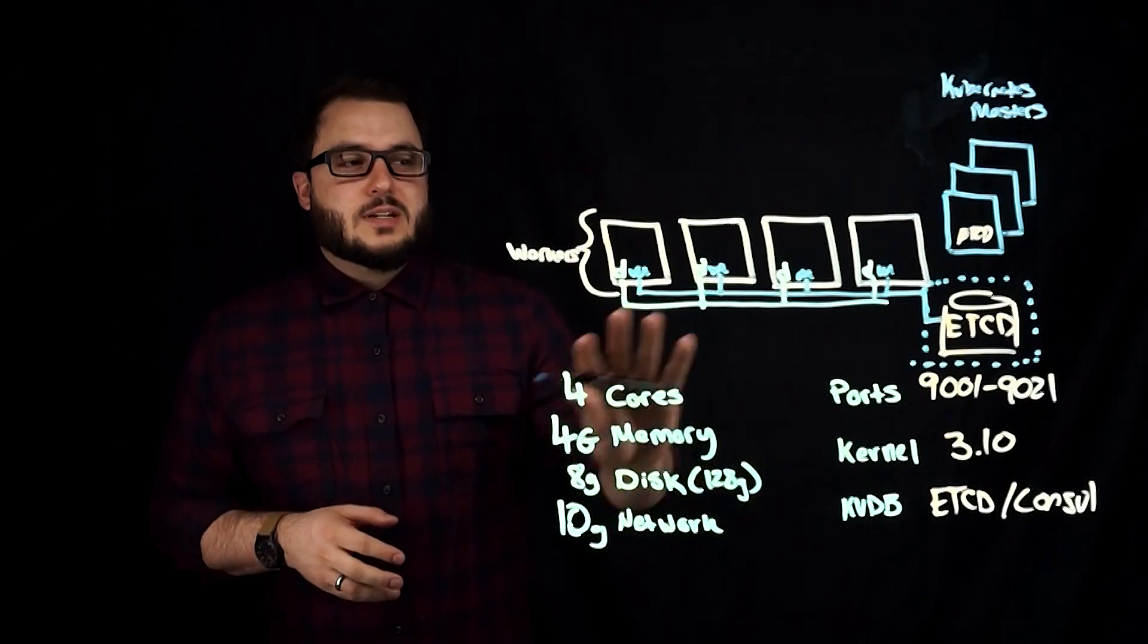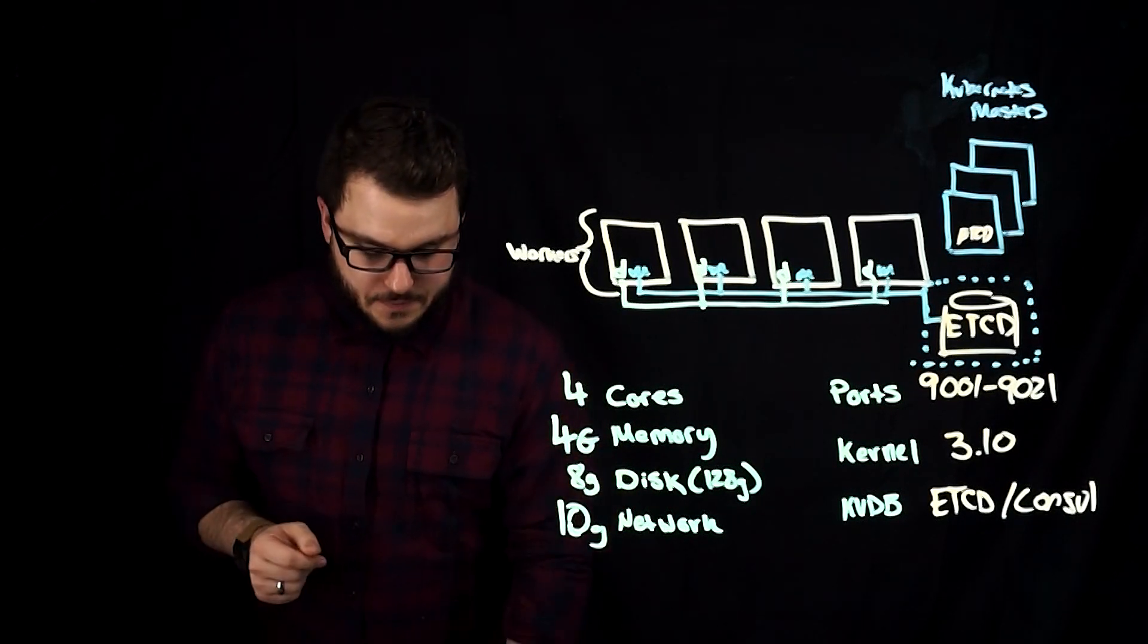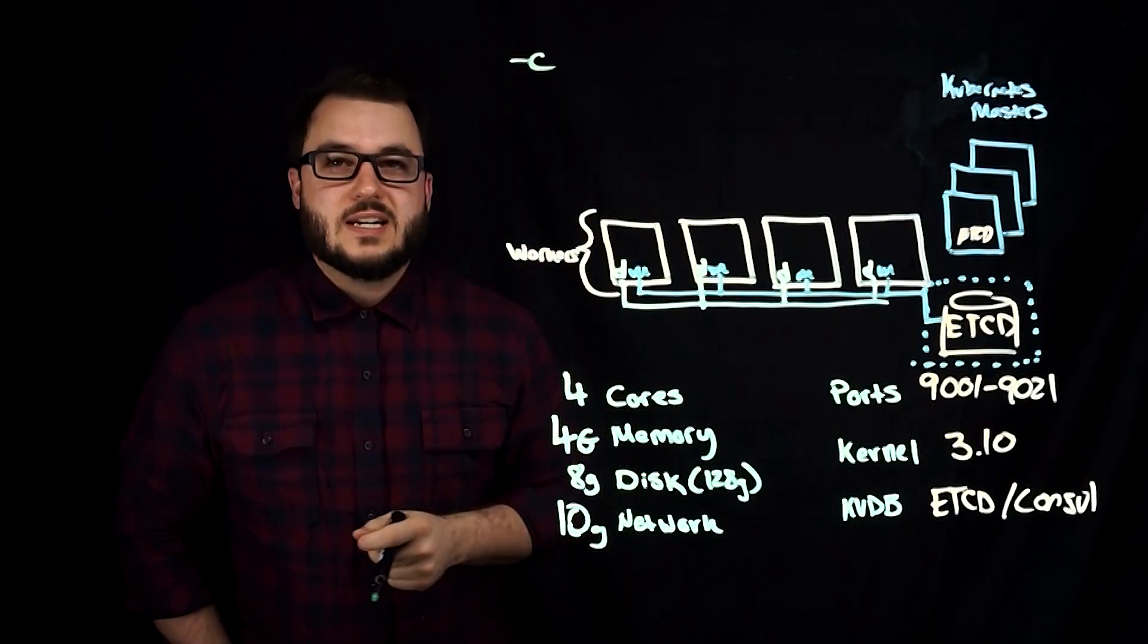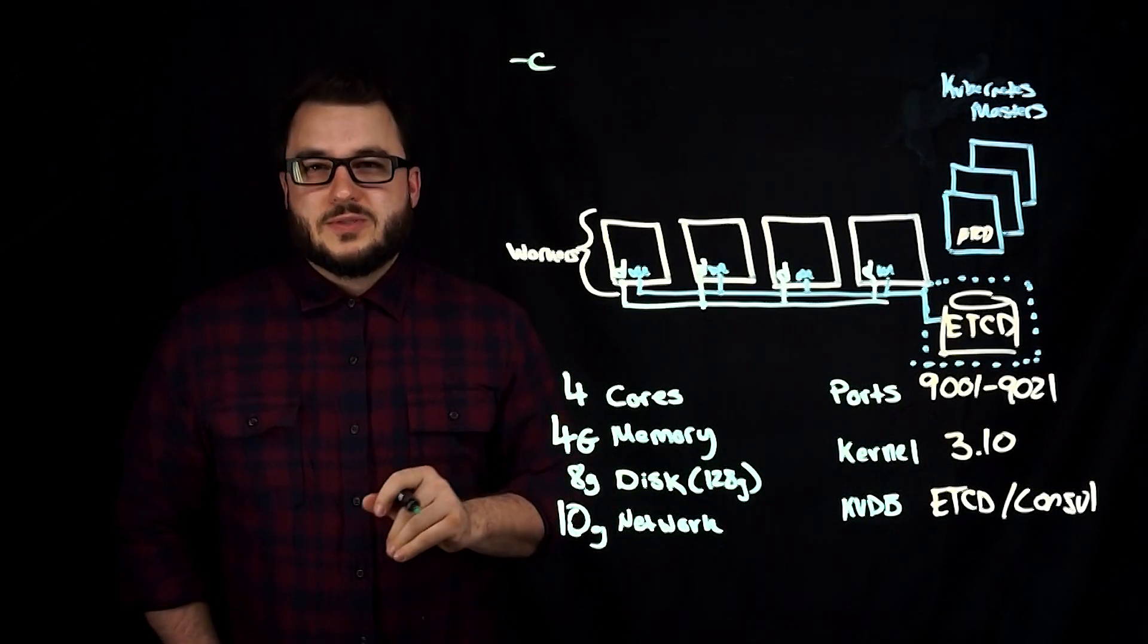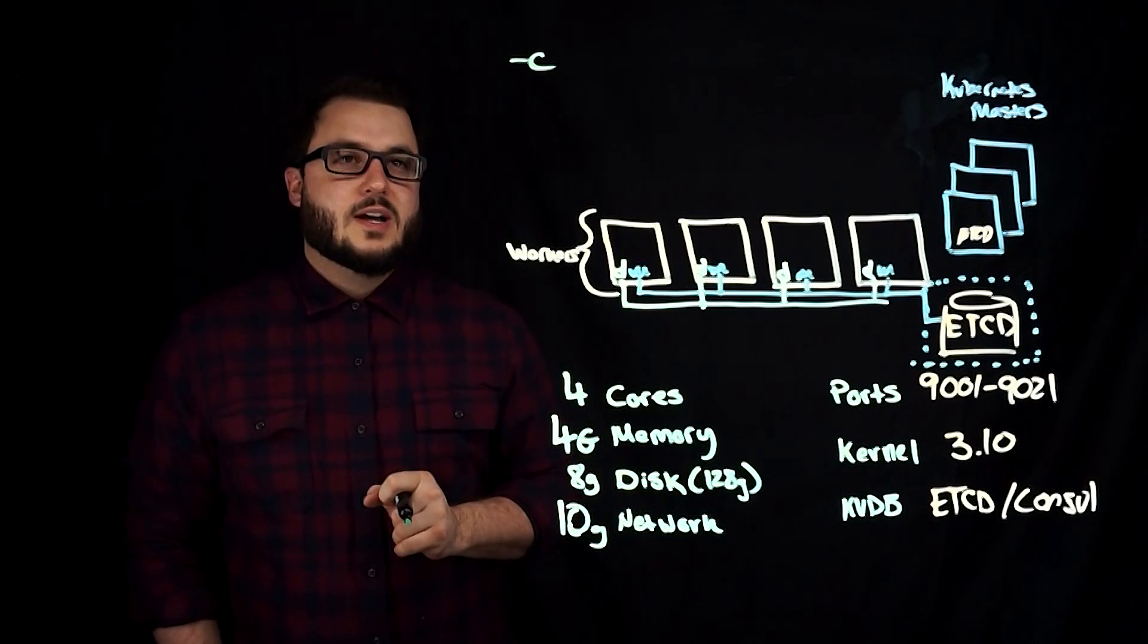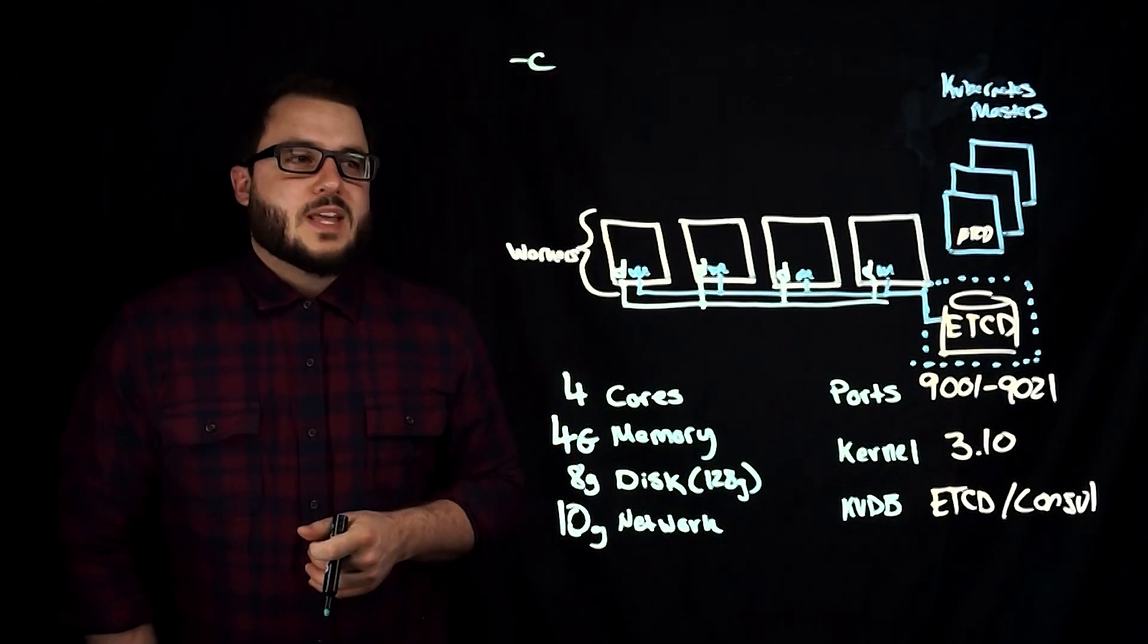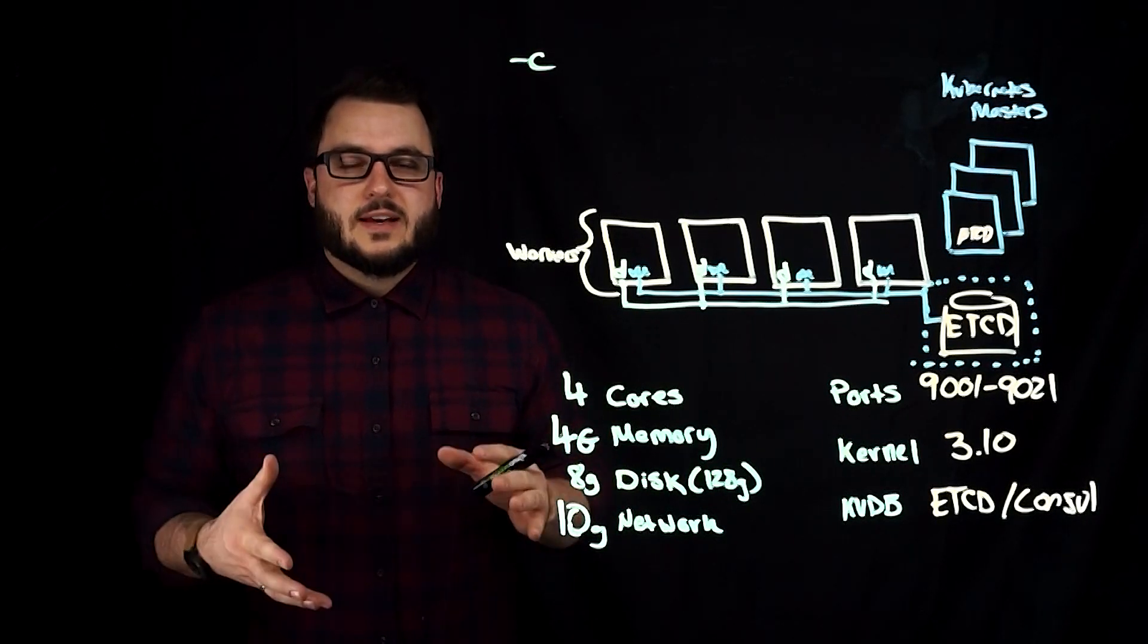Now we have a good picture of the resources needed for Portworx. We're going to talk about how to actually configure it. The first thing I'm going to talk about is our dash C option. After I go through some of these, I'll show an example of what this looks like within the Kubernetes deployment or daemon set as Portworx runs as. You can get a view of what this looks like from the command line or YAML view.